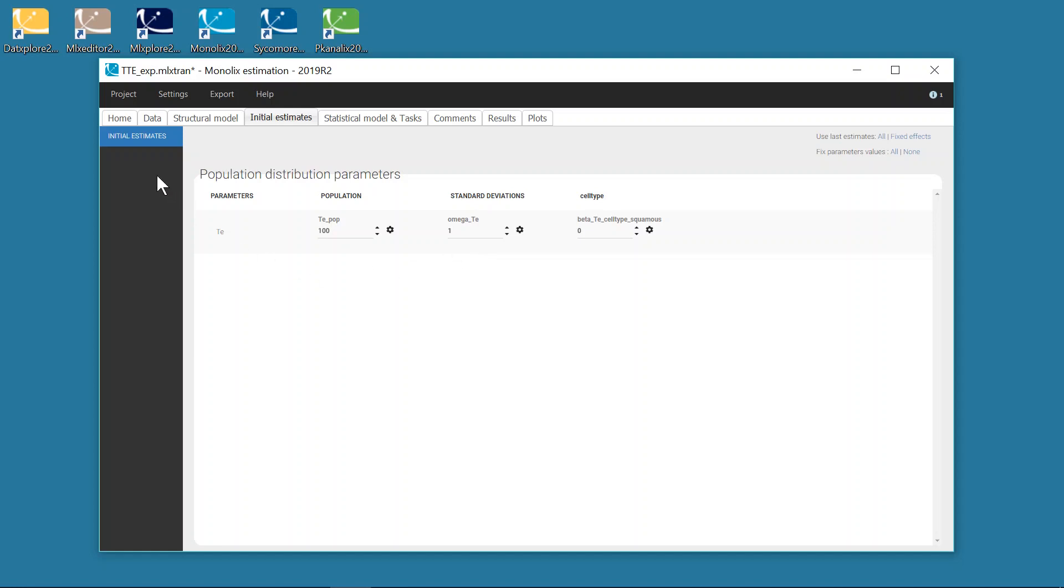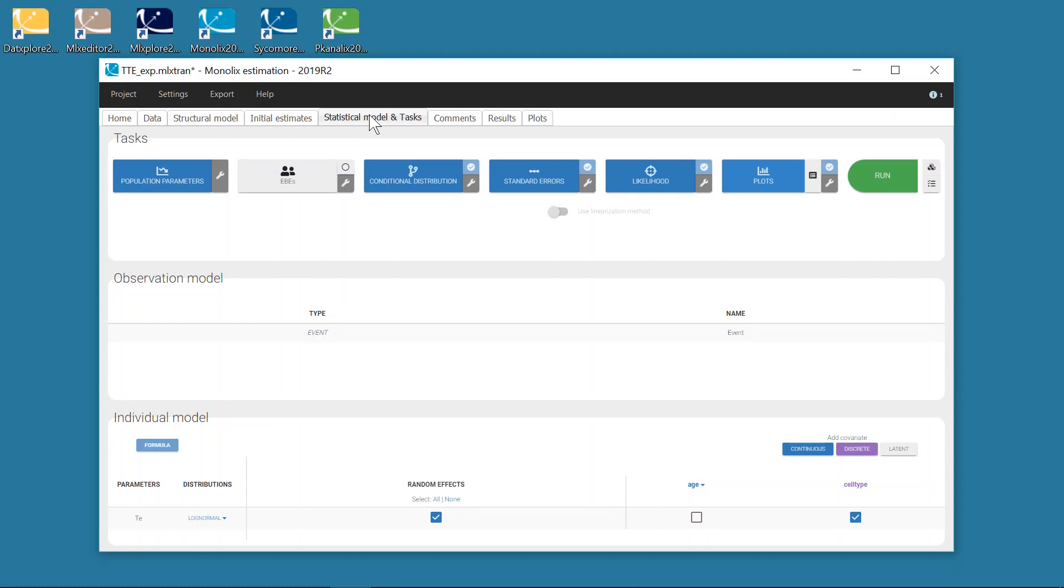Note that with time-to-event data, there is no check Initial Estimates plot like for continuous data. We can then see the statistical model in statistical models and tasks. For time-to-event data, there is no observation model. In the individual model, I have kept the default log-normal distribution for TTE, as well as its random effect.